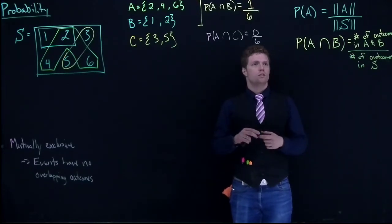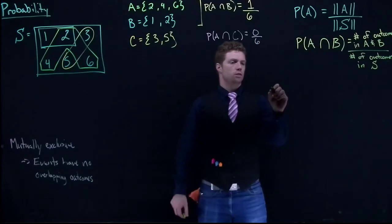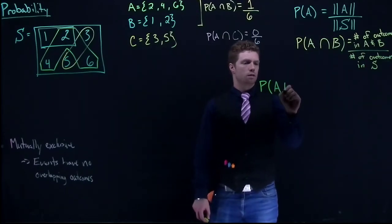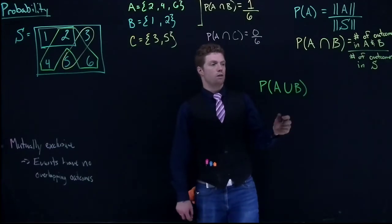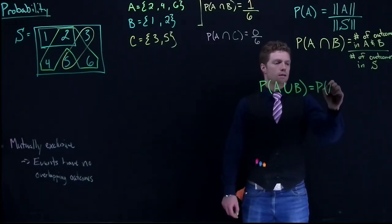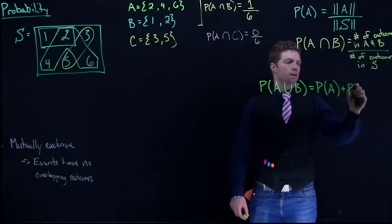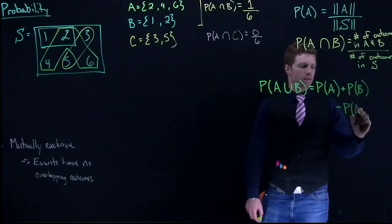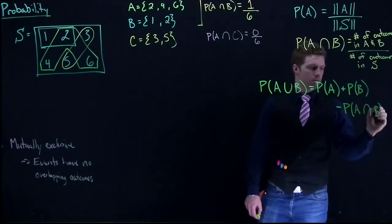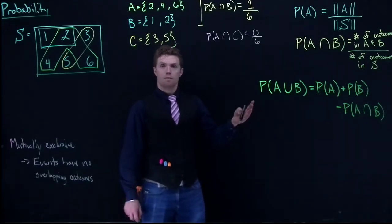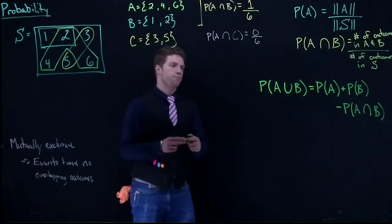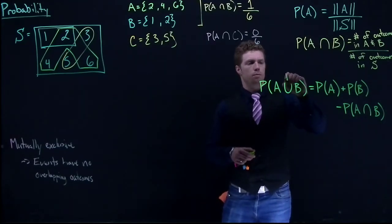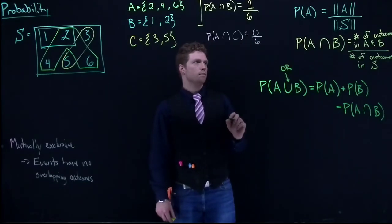We've covered the probability of a single event, the probability of when two events intersect, and what we call it when two events don't intersect — mutually exclusive. Now we have two more things to cover: what's called a union. The probability of A union B equals the probability of A plus the probability of B, minus the probability of A intersect B. Another way to talk about the union symbol is the word 'or,' and similarly the intersect symbol means 'and.'